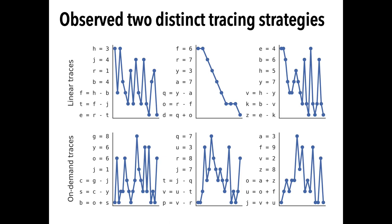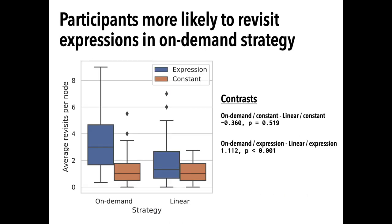We couldn't directly observe forgetting, so we proxied forgetting by the number of times someone visited a line of code more than once. Under this model, we computed the distribution of revisits.